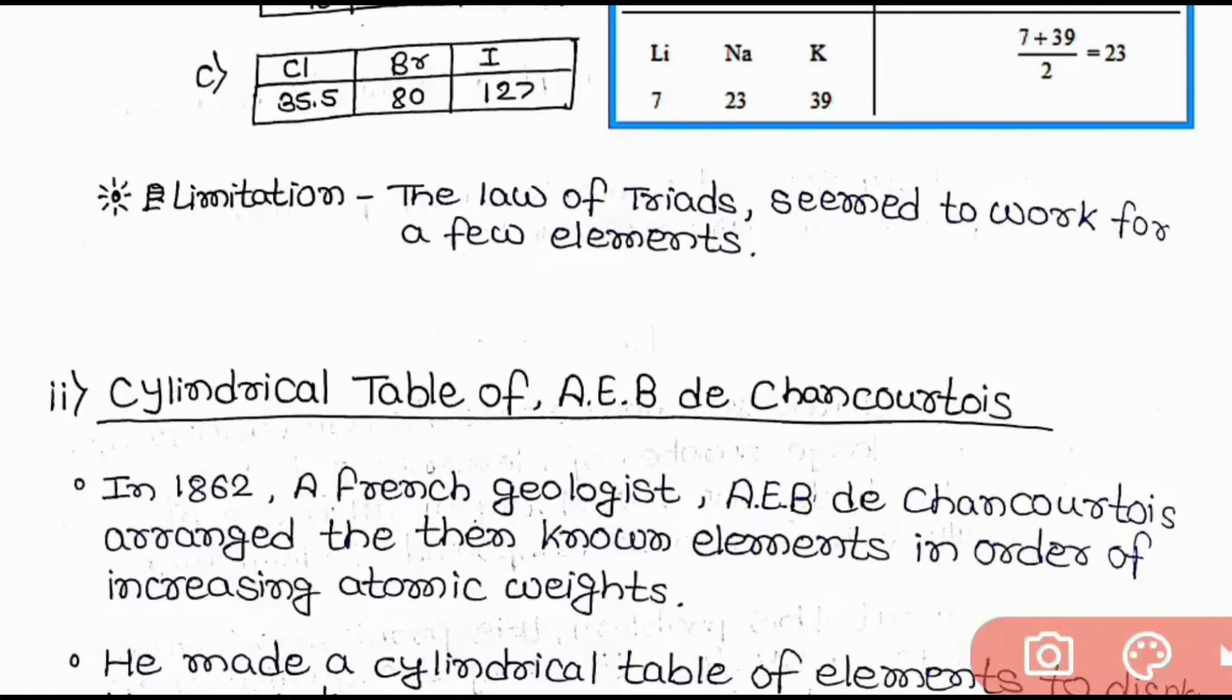Now let us come to the limitation of Döbereiner's Triad. The law of Triad seems to be worked for a few elements, not all elements.